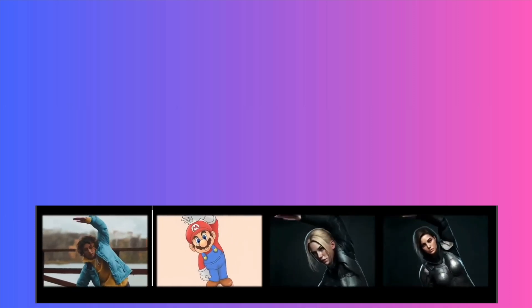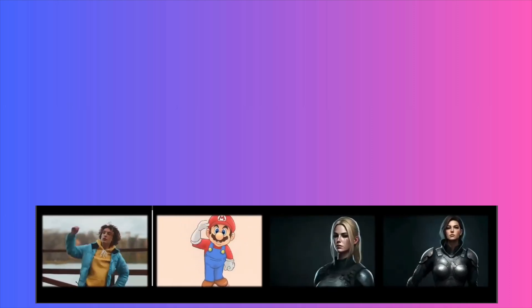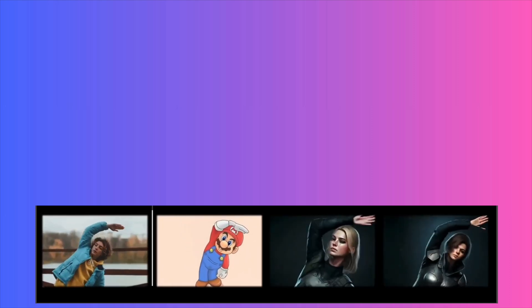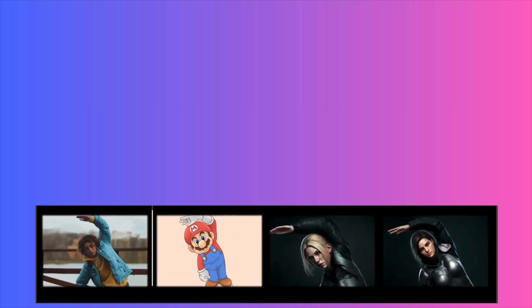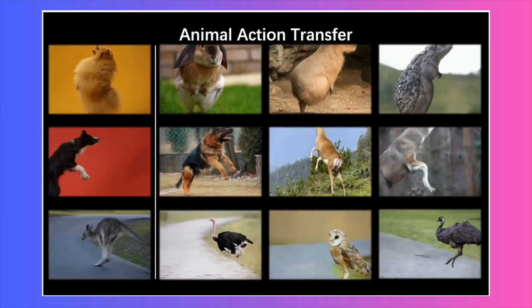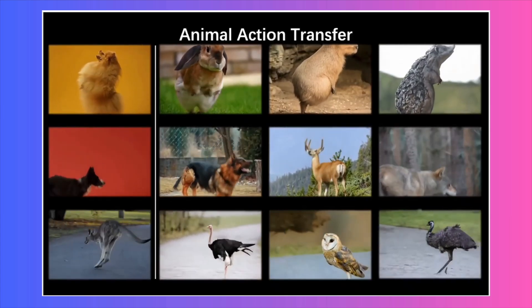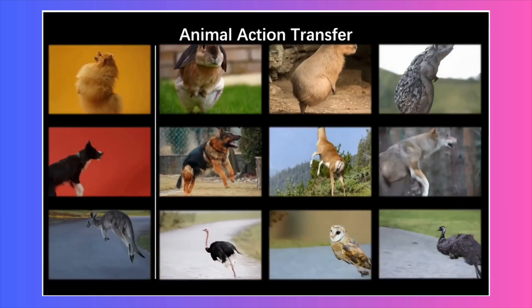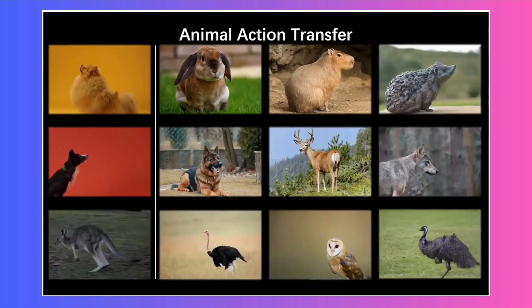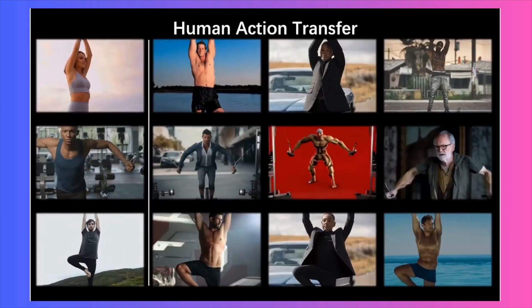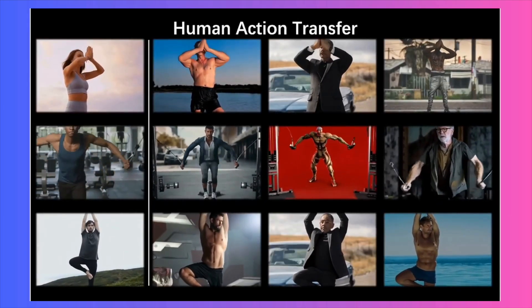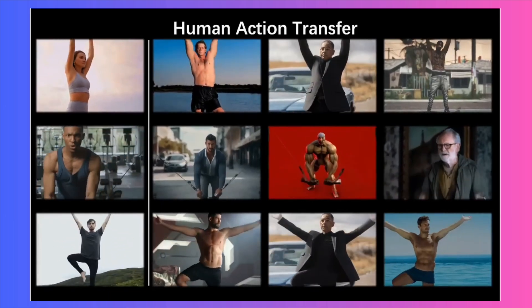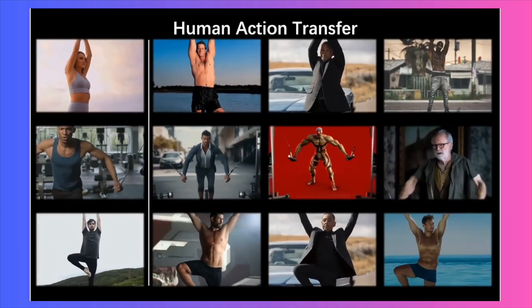It even works with characters that have completely different body shapes. See how it handles this 2D image of Mario? His body is way more compact, but the AI still brilliantly transfers the woman's movements onto him. My favorite has to be this last row where they take the hopping motion of a kangaroo and transfer it onto birds — it's as amazing and wild as it sounds. The AI is also fantastic at handling more complex motions like specific yoga poses or workout routines.